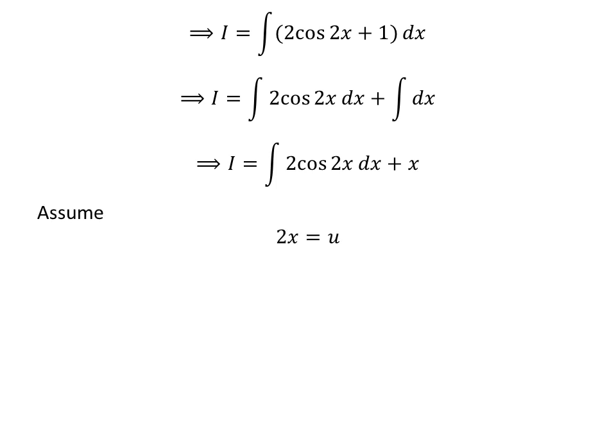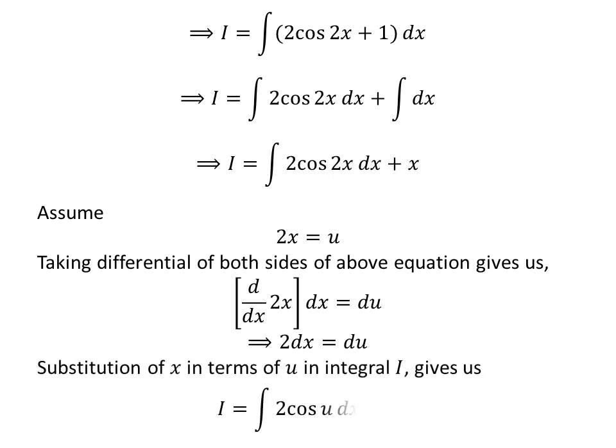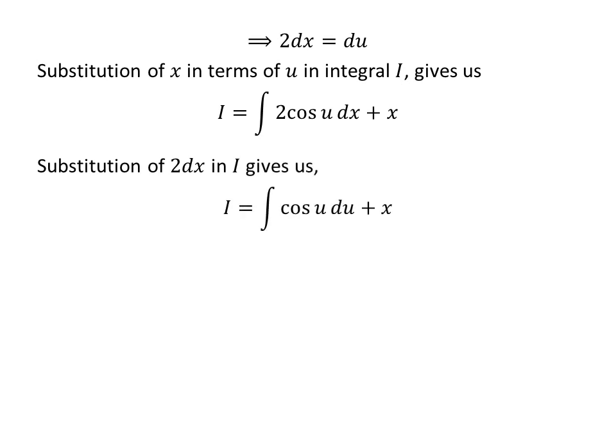We apply the substitution method to find the integral of 2cos(2x). Let u = 2x. Taking the differential of both sides gives 2 dx = du. Substituting into the integral of 2cos(2x) yields the integral of cos(u) with respect to u, plus x.